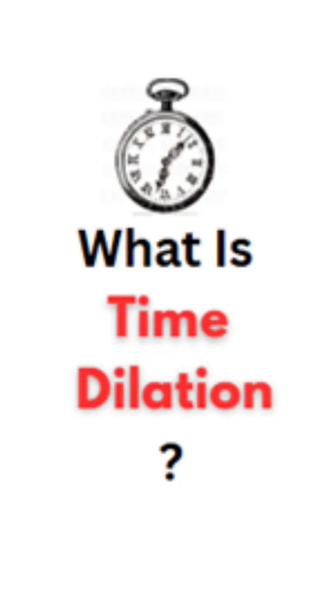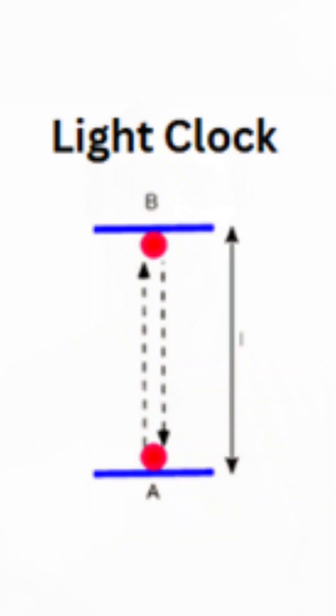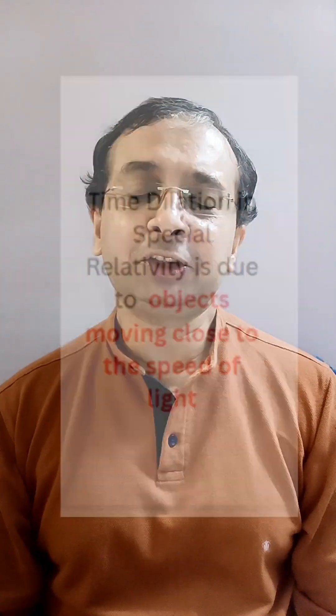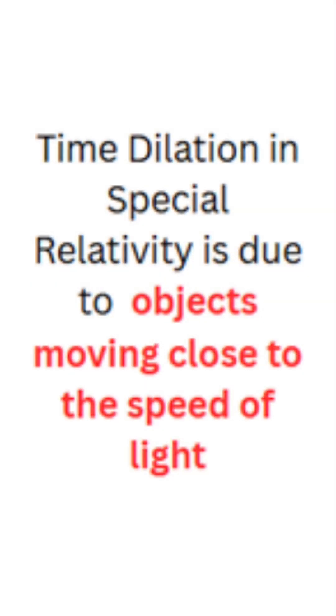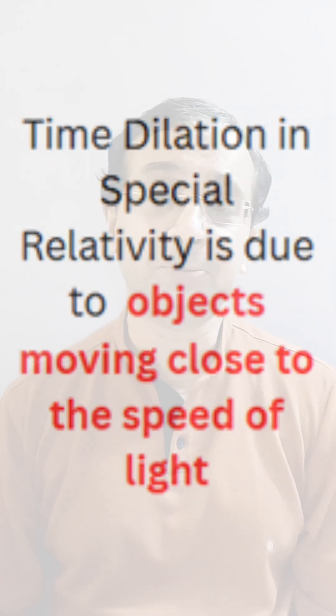A big misconception in learning relativity is time dilation and gravitational time dilation. Think of time dilation using something called a light clock. The light clock goes up and down — tick tock — as light reflects between two mirrors, and each tick-tock cycle makes one unit of time, like a second. Time dilation in the special theory of relativity happens because of speed or velocity, when things are moving close to the speed of light.